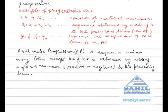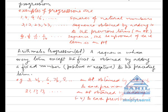Arithmetic Progression, abbreviated as AP. A sequence whose every term except the first term is obtained by adding a fixed number, positive or negative, to the preceding term is called an AP. For example, 4.5, 6, 7.5, 9, etc.